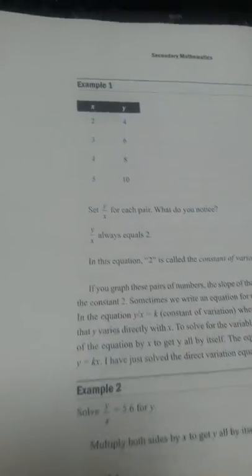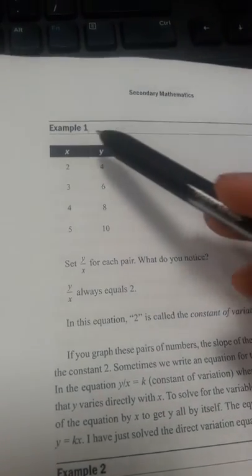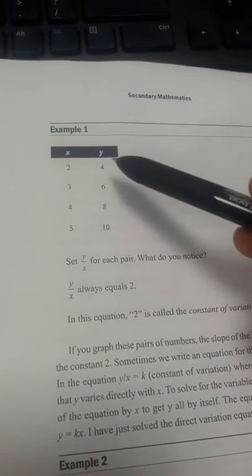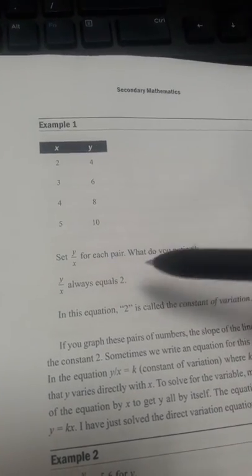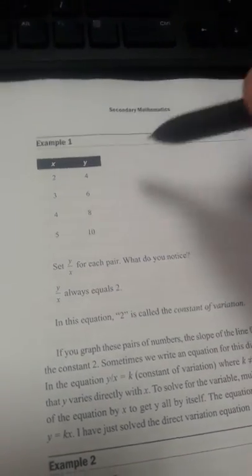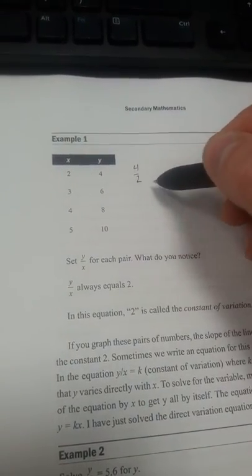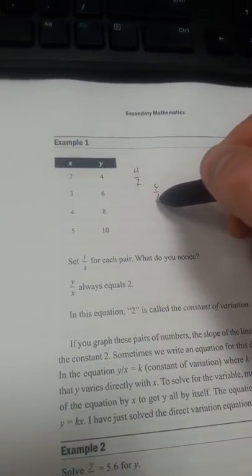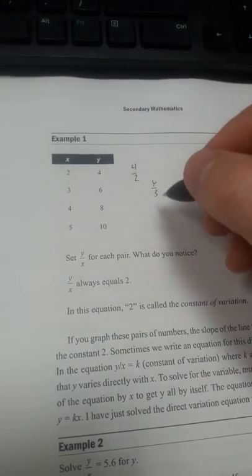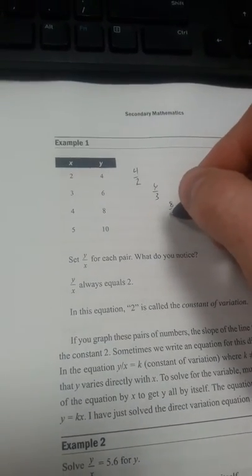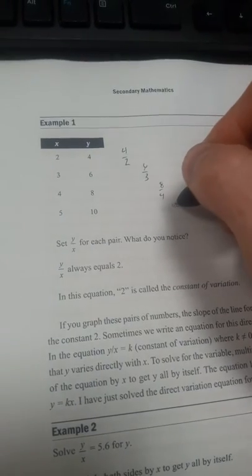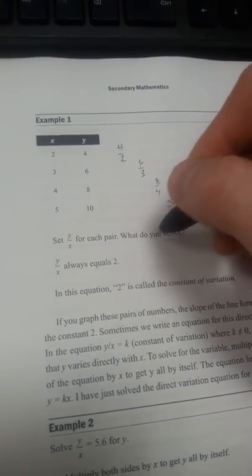They'll give you an example here. Here are the x's or the inputs: 2, 3, 4, 5, and the outputs over here. So if we set y over x for each of these, we go 4 over 2, and then 6 over 3, and then this one 8 over 4, and this one's 10 over 5.